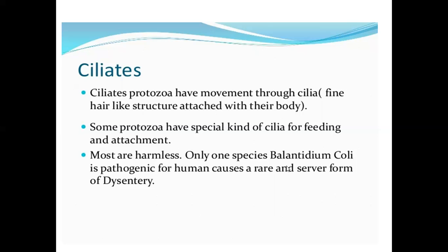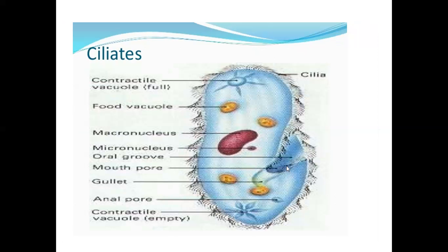Examples of flagellates are Trypanosoma and Leishmania — blood pathogens; Giardia — intestinal parasite; and Trichomonas — reproductive tract pathogen. Second, ciliates: ciliate protozoa move through cilia, fine hair-like structures attached to their body. Some protozoa have special kinds of cilia for feeding and attachment. Most are harmless; only one species, Balantidium coli, is pathogenic for humans and causes dysentery.